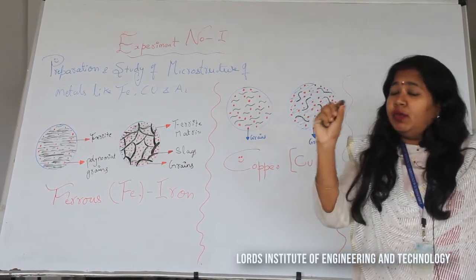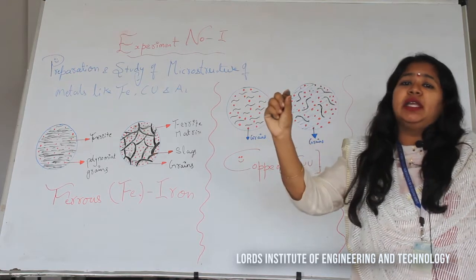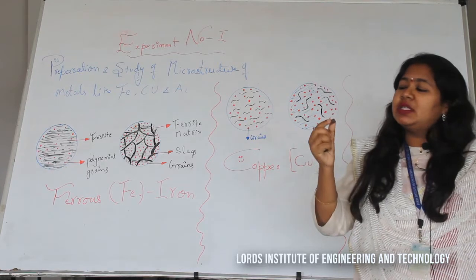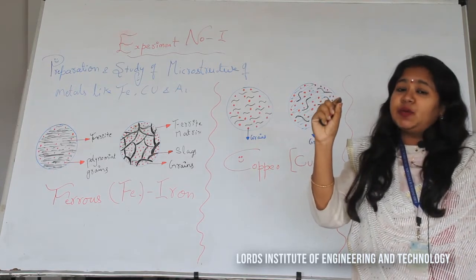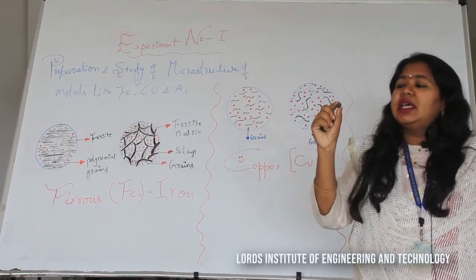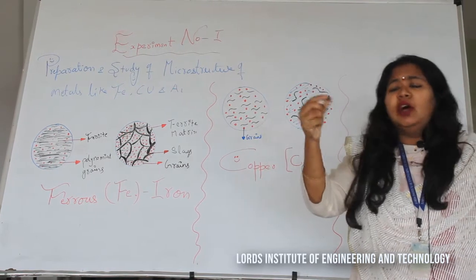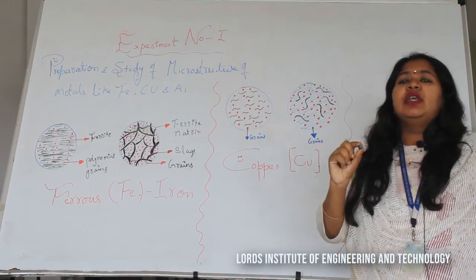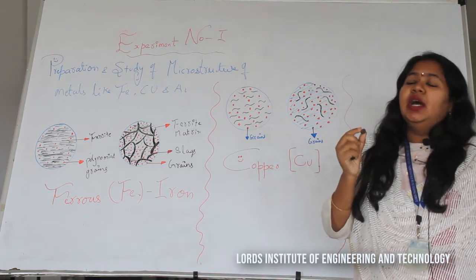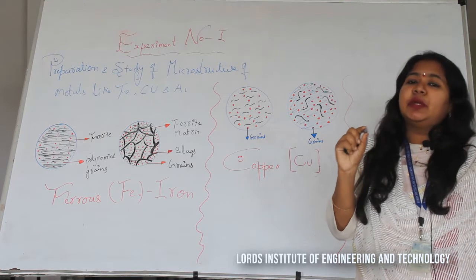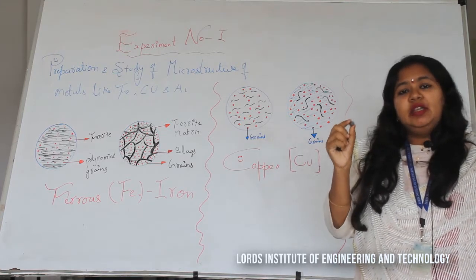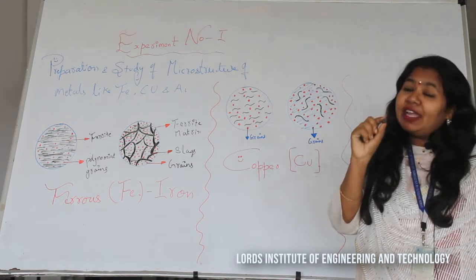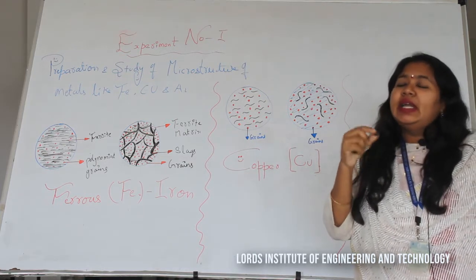If you want to see the microstructure of a naturally available metal, you will not find the exact one because it is corroded and has already reacted with numerous elements on the earth's surface. So whenever we want to see the original structure inside, we go for grinding and polishing to reveal the fine structure of these metals.